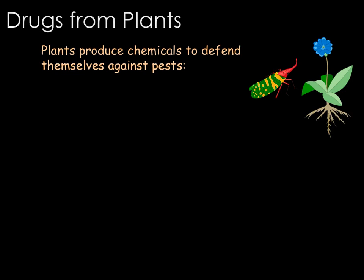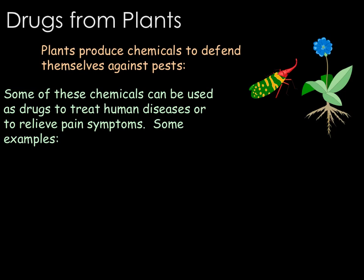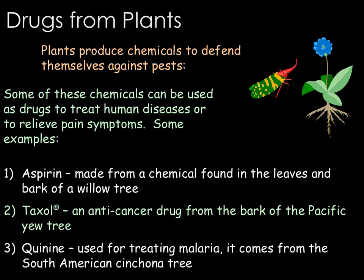As you may remember from Edexcel B1, many plants produce chemicals to defend themselves against pests, such as antiseptic and antibiotic products. We can use these to make drugs to treat human diseases or to relieve pain symptoms. For GCSE you need to know three examples. The first is aspirin, which is made from a chemical found in the leaves and bark of the willow tree. Aspirin is used to treat many types of pain and can also lower fevers.